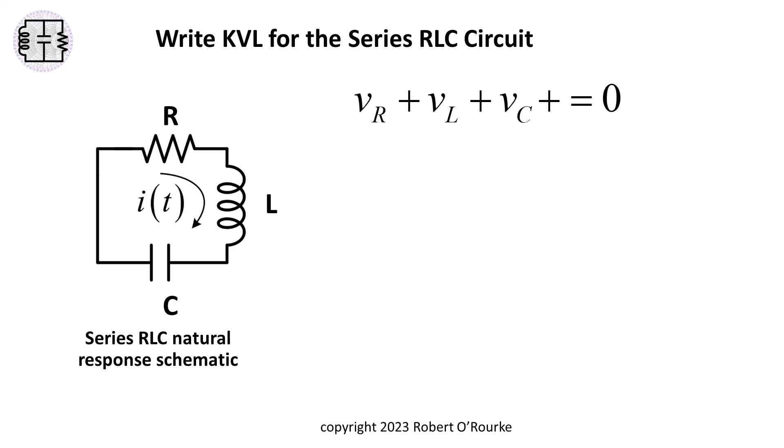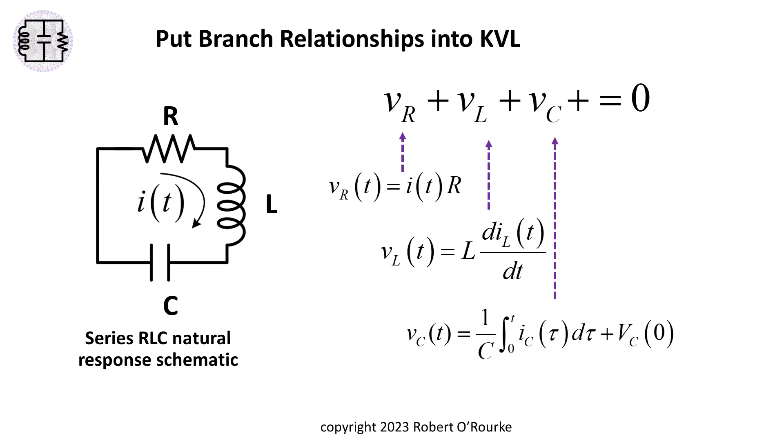KVL says that the sum of the voltages around the loop equals zero. We can put voltage branch relationship expressions into the KVL equation to generate the series RLC differential equation to be solved.